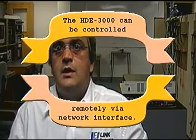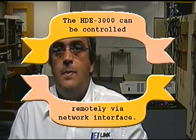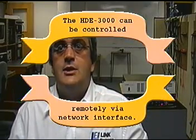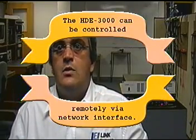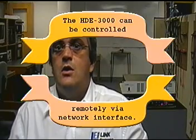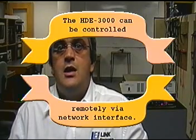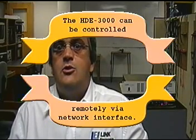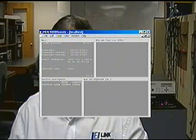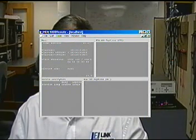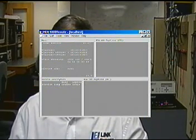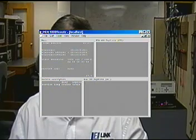It also has software that can be run remotely. So through the ethernet you can control the HD 3000 from a different location. This is the screen capture of the HD 3000 software — with this software you can control multiple units in the same window.